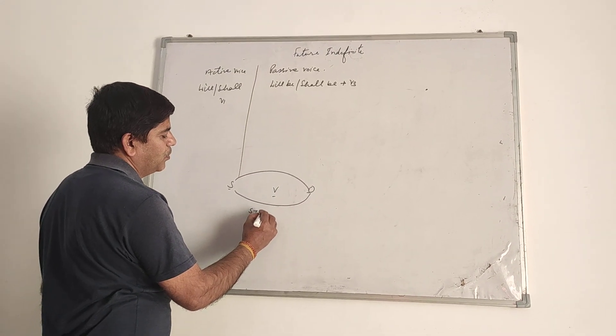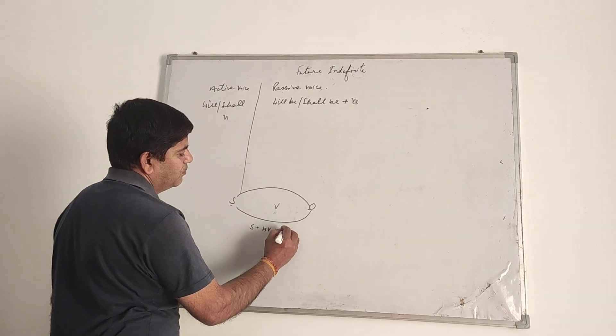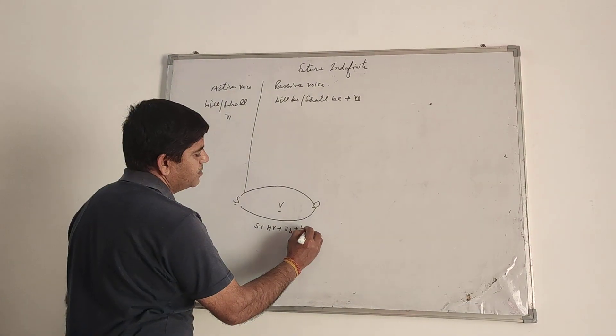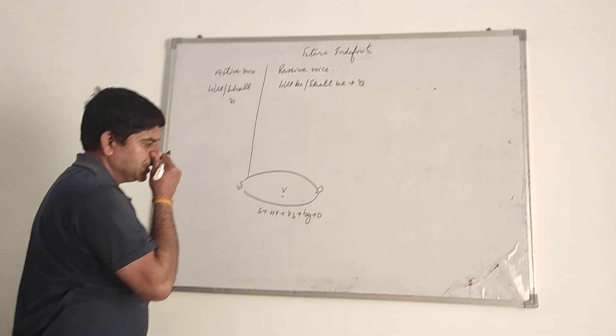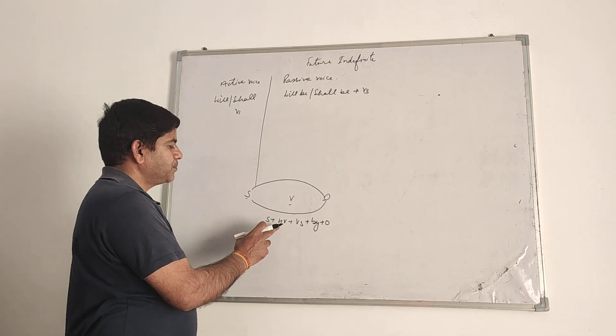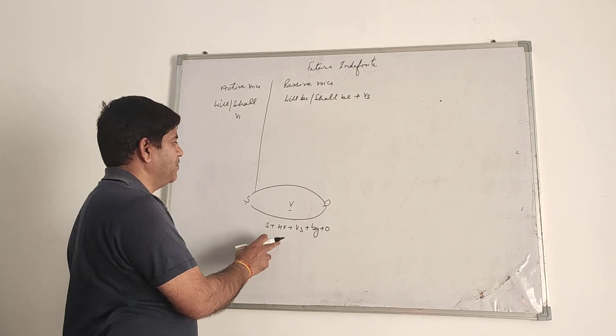We will apply the simple formula: subject, helping verb, V3, by, and object. Same formula as we have done in present indefinite and past indefinite.